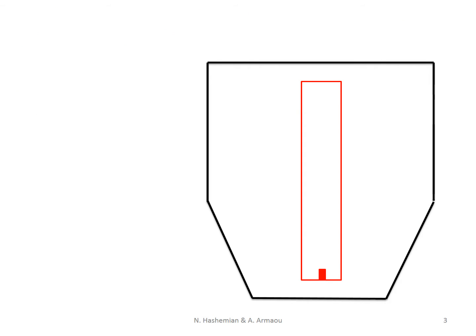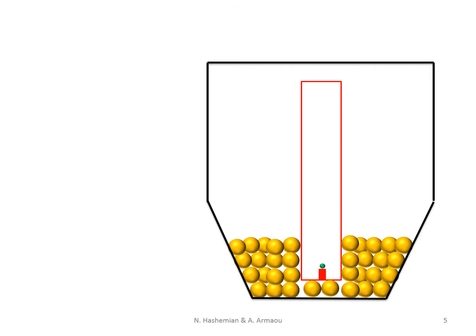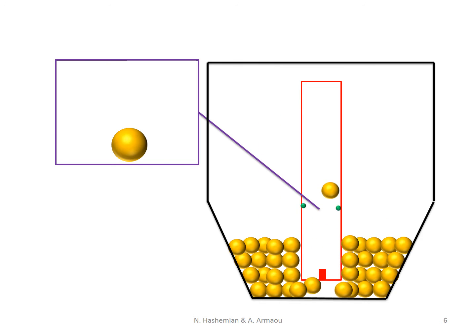The Wurster unit operation is used for granulation in the pharmaceutical industries. This unit has two concentric cylinders, the insert and the annulus. An air stream flows into the unit from the bottom. The particles are loaded in the annulus. The particles from the annulus pass through the partition gap and then are pushed into the insert. The solvent is sprayed on the particles flowing in the insert. Then particles collide with each other and form bigger ones. The particles slow down and fall back into the annulus. The recirculation is continued until the desired size and composition are achieved.